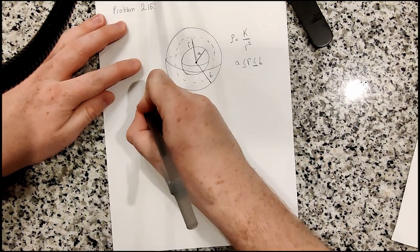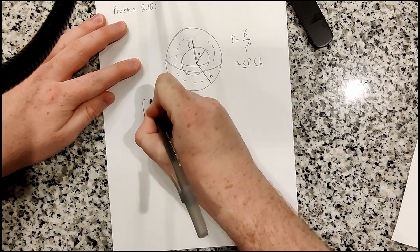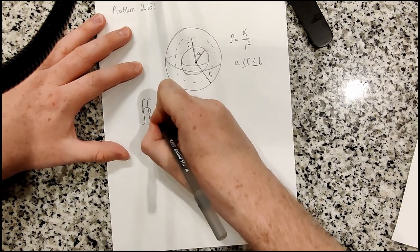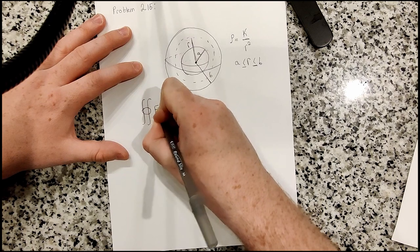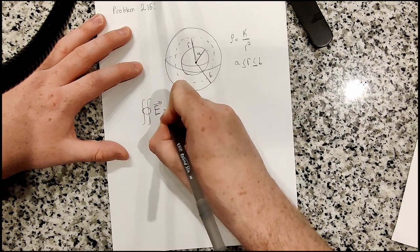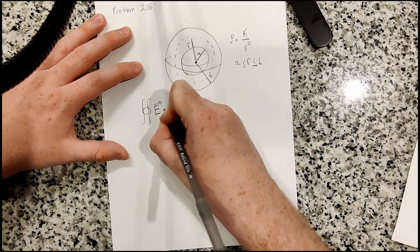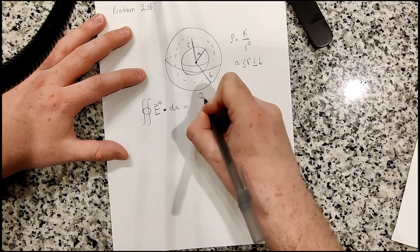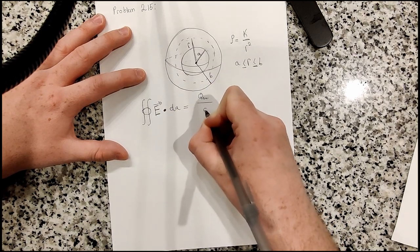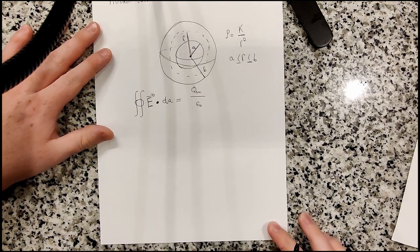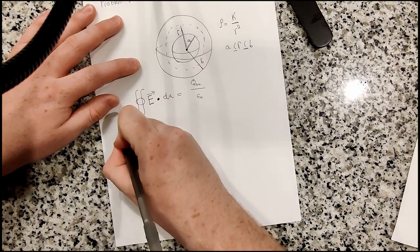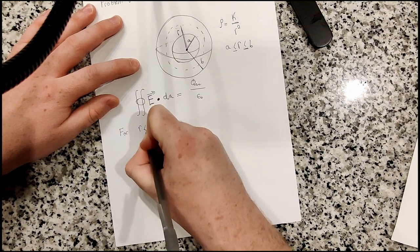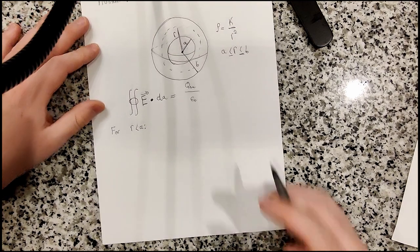So let's go ahead and just quickly write down Gauss's law. So Gauss's law tells us that the electric flux through some surface, integral E dot da, is equal to the charge enclosed divided by epsilon naught. That's Gauss's law. So let's consider for the region r less than a, what do we have?